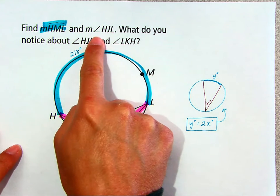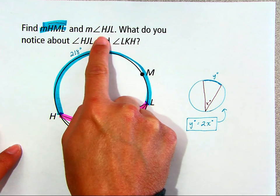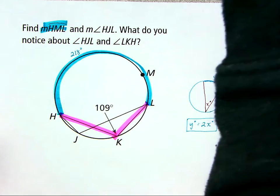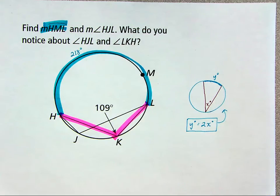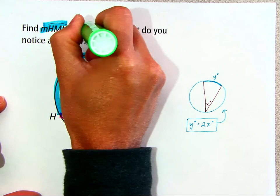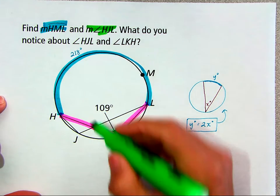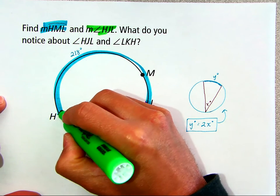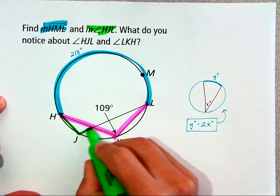Alright, we also want to find the measure of angle HJL. So let's use green for that. Okay, so that angle, HJL, would be right here, HJL.